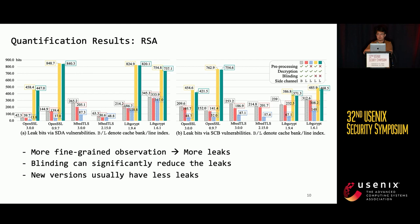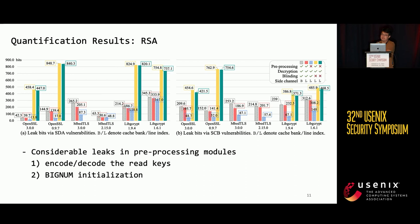Some findings are very straightforward. More fine-grained side-channel observations have more leaks, and crypto blinding can significantly reduce the leakage. Also, newer versions of the software generally have fewer leaks. We find that the preprocessing modules in this software have a considerable amount of leakage. These preprocessing modules include functions that encode or decode the key read from users' files, or functions that initialize big numbers for computations.